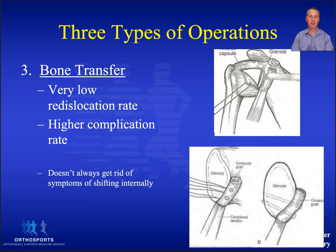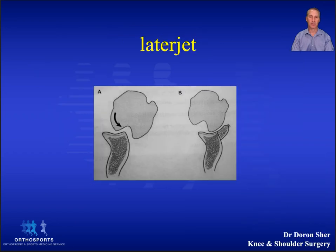It seems that the body wants to return the glenoid to its original size, and there are concerns this may lead to problems with the screws, which might start to migrate. This means the young contact athlete is almost certainly better off with an open capsular shift if they don't have significant bone loss.